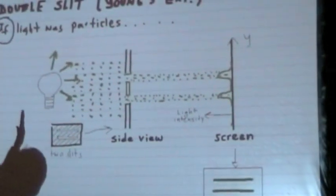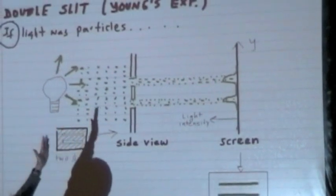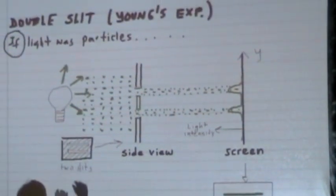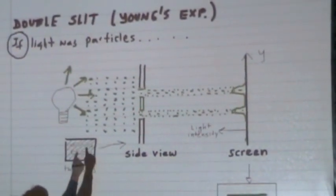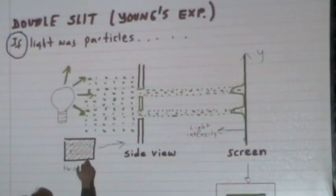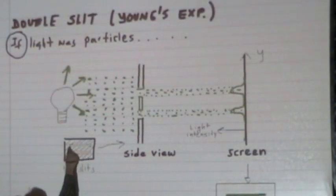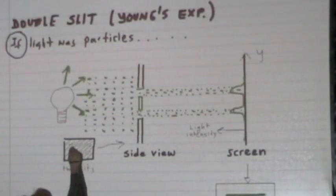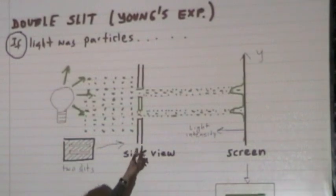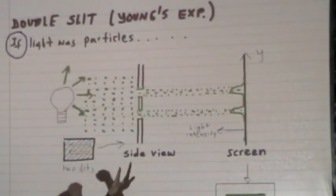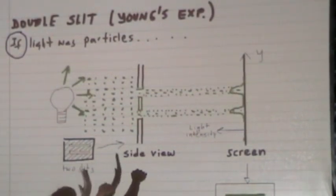But he did it. So you send light this way, then the light goes through a screen. This is what the screen looks like from the front, and this kind of diagram confuses people. The screen has two slits cut out. This is the side view of that screen — the screen goes this way and it has slits here and here, and the light is coming from this direction.